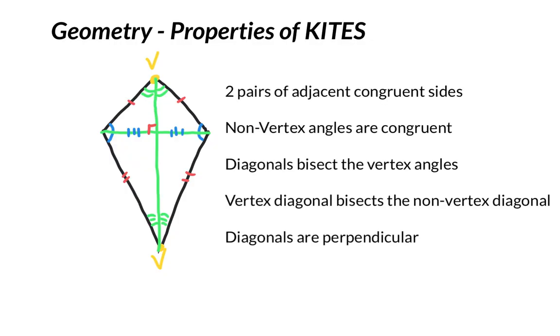All right. So let's point these out. Two pairs of adjacent congruent sides, so this pair and this pair. And again, unlike a rectangle where the congruent sides are across from each other, these two actually meet.